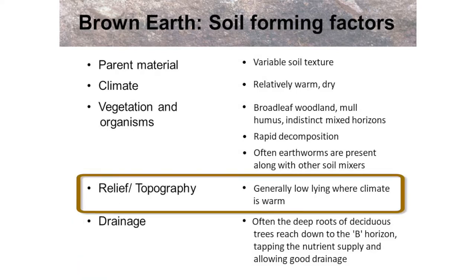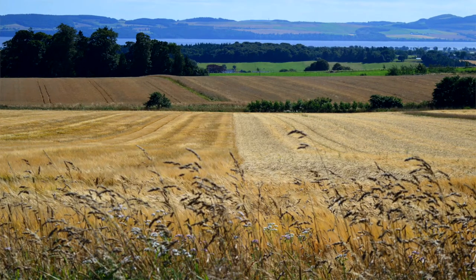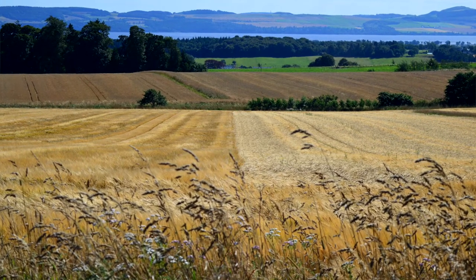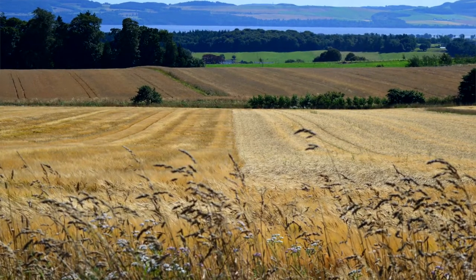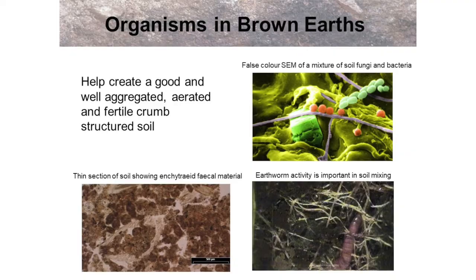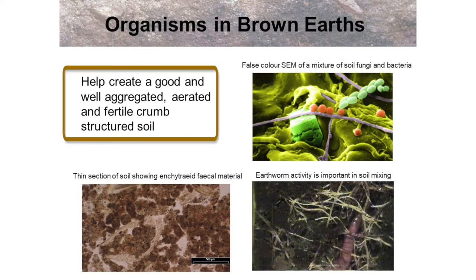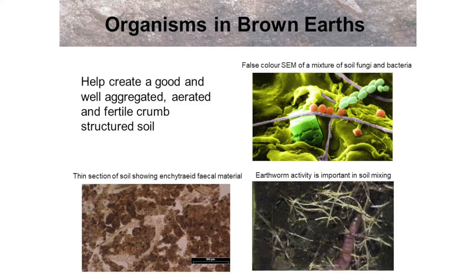Brown earths are normally found in low-lying areas because the climate needs to be warm to allow their formation to take place. Organisms help to create a good, well-aerated and fertile crumb-structured soil, perfect for growing crops in.